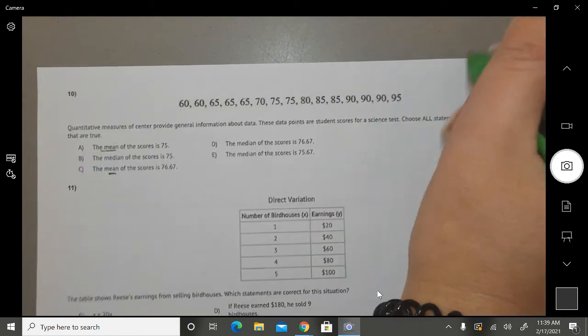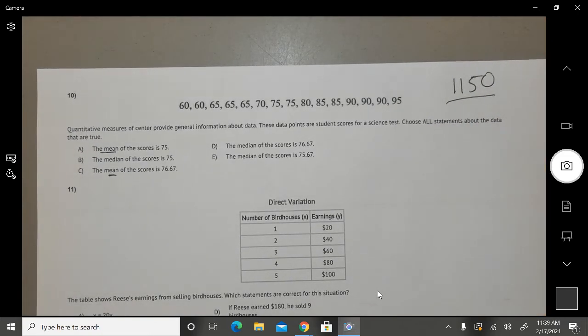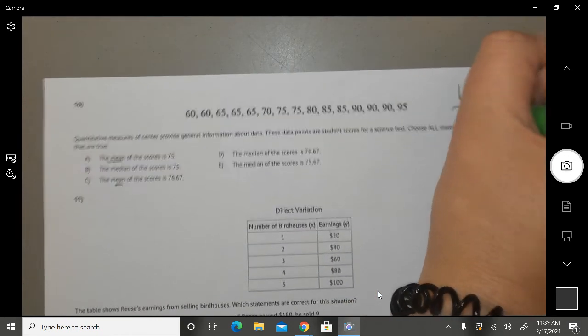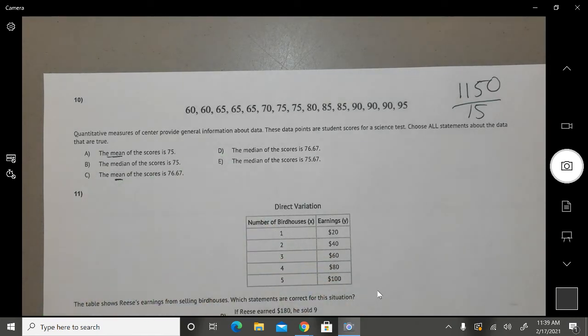You should get 1150. That's what you should get. Anybody else get 1150? Divided by 15, because there's 15 numbers in the data set. What do you get? 76.66. All right, so which mean is it going to be? Is it going to be 75 or 76.66? A or C? C.